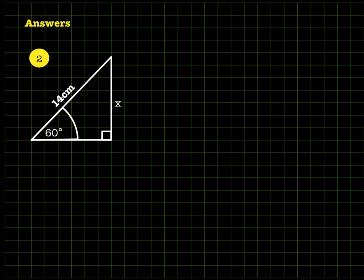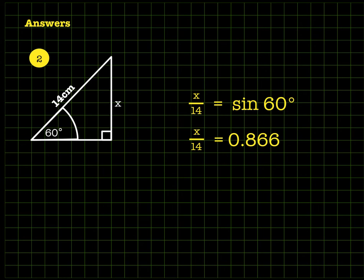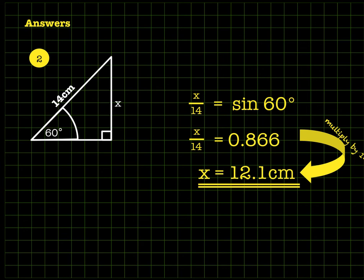Question two: the longest side is 14 centimeters and x is opposite the 60 degree angle. So x divided by 14 equals sine 60, which is the same for all 60 degree right-angled triangles. The calculator gives about 0.866, so x divided by 14 is 0.866. Multiplying both sides by 14 gives x approximately 12.1 centimeters. You can draw that to verify it's a working triangle.